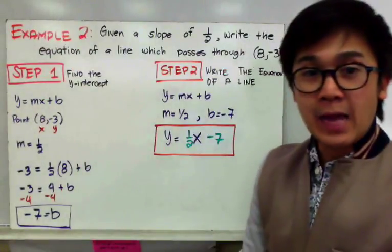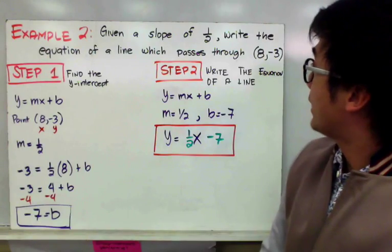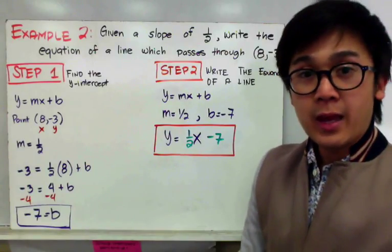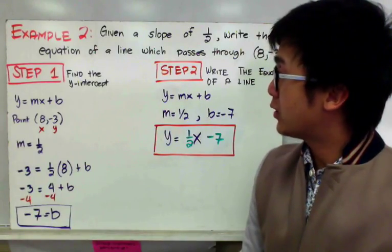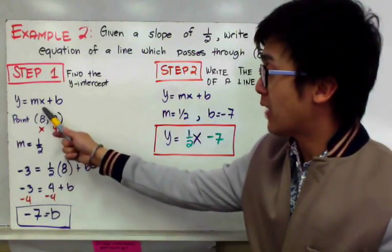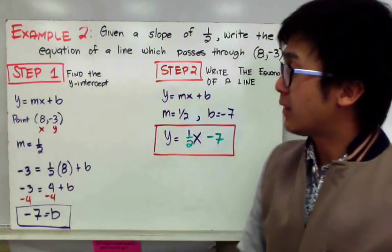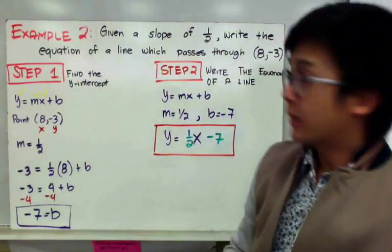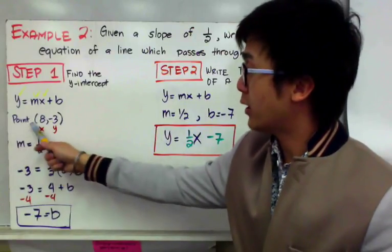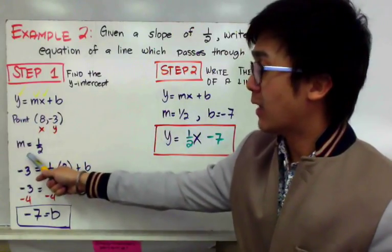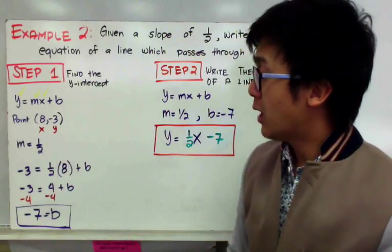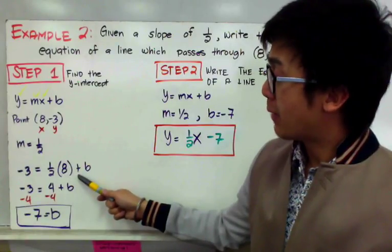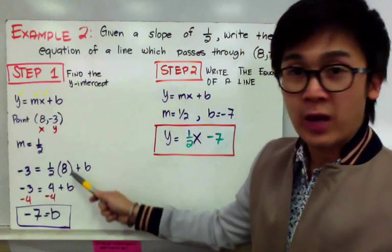In the second example, we are given a slope of one-half and we need to write the equation of a line passing through (8, −3). By the first step, we find the y-intercept using the slope-intercept form, replacing y, m, and x with the given values. We have the point (8, −3) and slope of one-half. By direct substitution: −3 = (1/2)(8) + b.